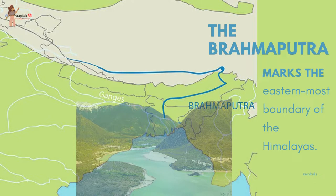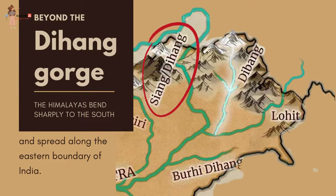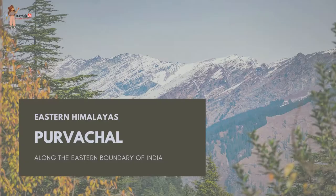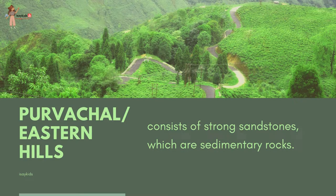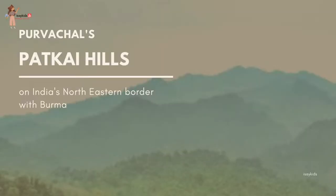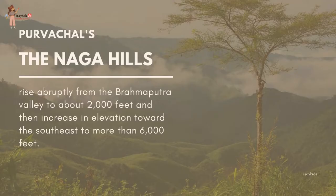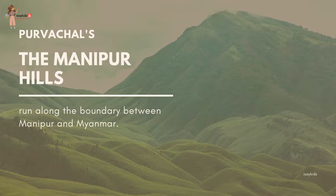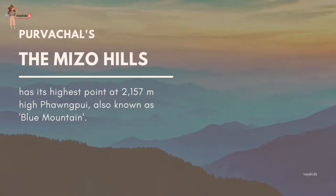The Brahmaputra marks the easternmost boundary of the Himalayas. Beyond the Dihang gorge, the Himalayas bend sharply to the south and spread along the eastern boundary of India. They are known as the Purwanchal or the Eastern Hills. Running through the northeastern states, these hills are mostly composed of strong sandstones, which are sedimentary rocks. Covered with dense forests, they mostly run as parallel ranges and valleys. The Purwanchal comprises the Patkai hills, the Naga hills, the Manipur hills and the Mizo hills.